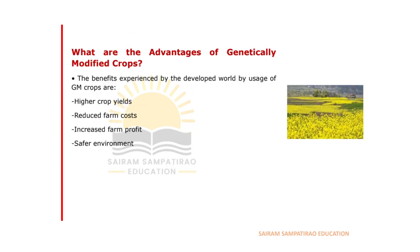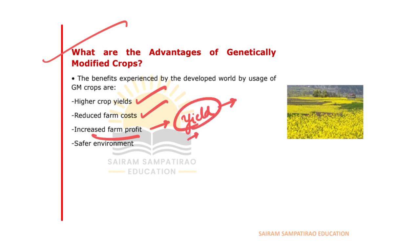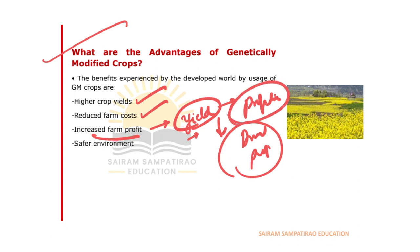The advantages of GM crops include: providing higher yields, reducing farm costs, and bringing greater farm profits. When the crop is not damaged — being drought-resistant and pest-resistant — it can grow under any conditions, bringing better yields. This is a boon to farmers and also provides a safer environment for the plant to grow.